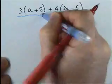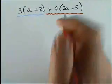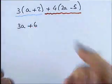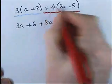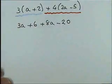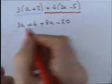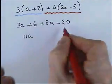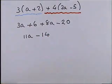We expand the first bracket including the plus: 3 a's are 3a and 3 twos are 6, so that gives 3a + 6. Then expand the second: 4 times 2a is 8a, and positive 4 times negative 5 is negative 20. Now simplifying: 3a + 8a makes 11a, and 6 take away 20 is negative 14. So the answer is 11a − 14.